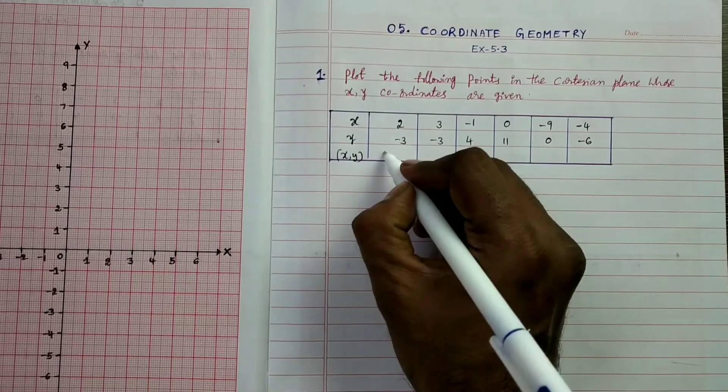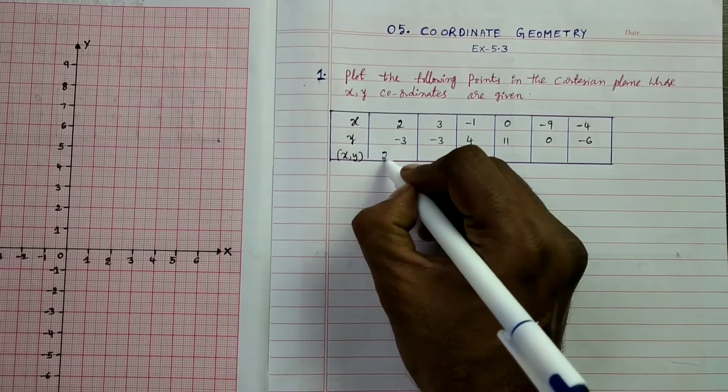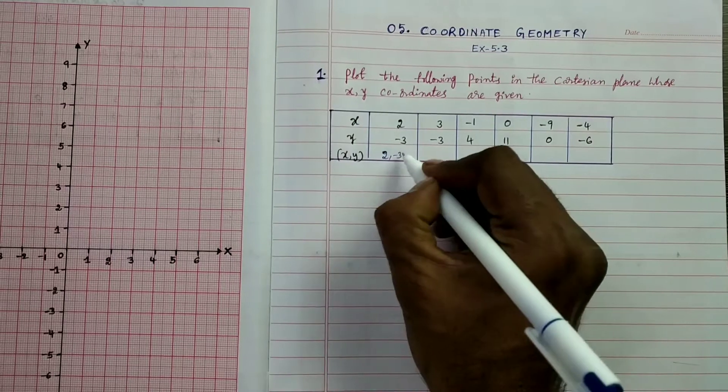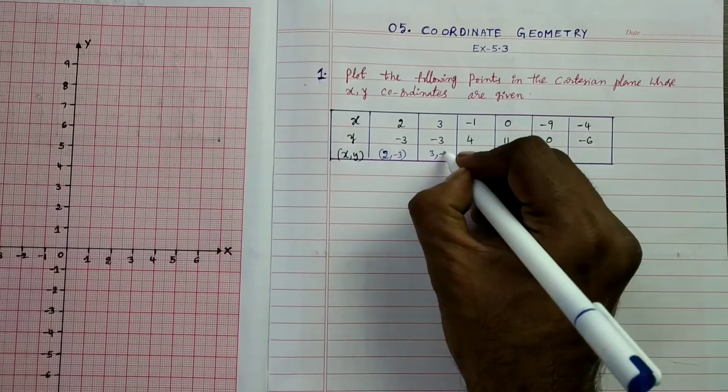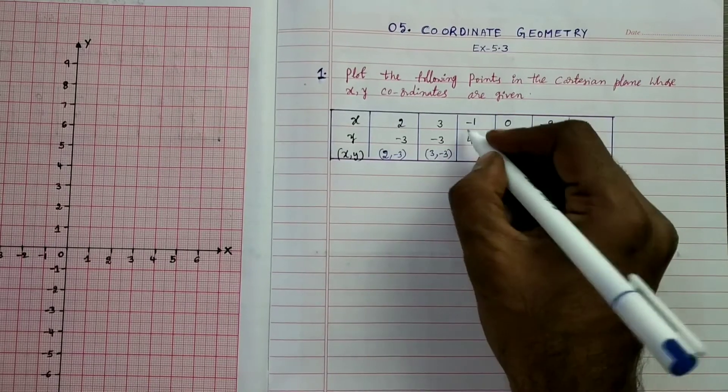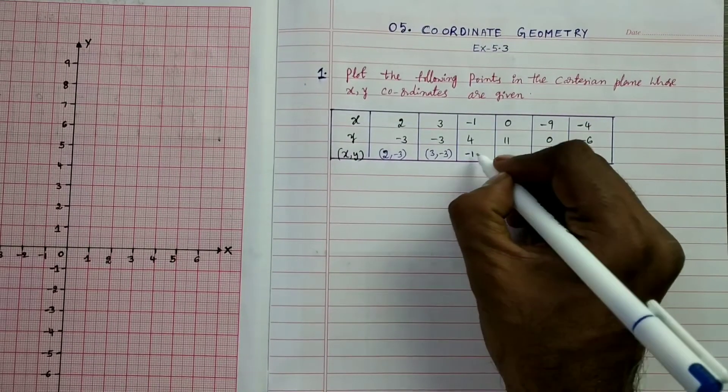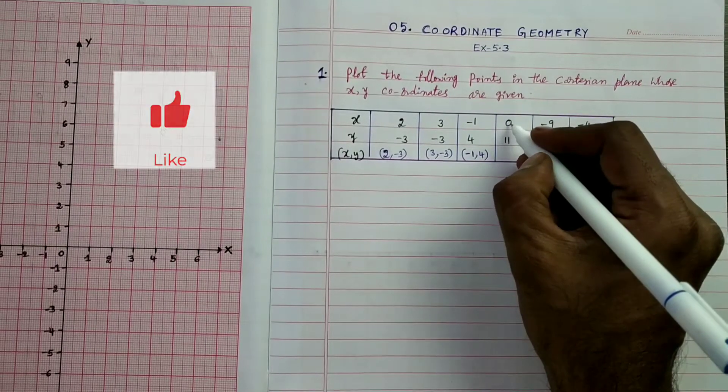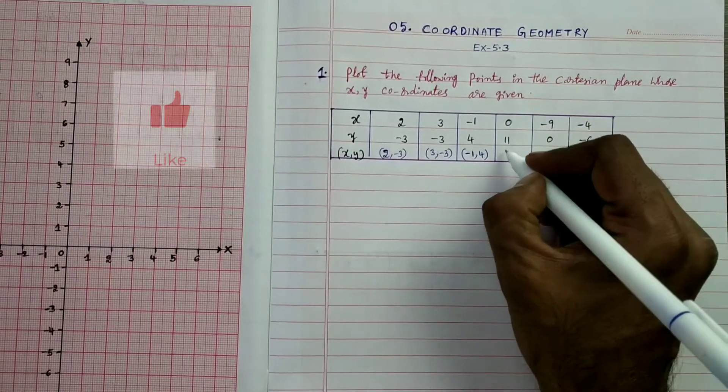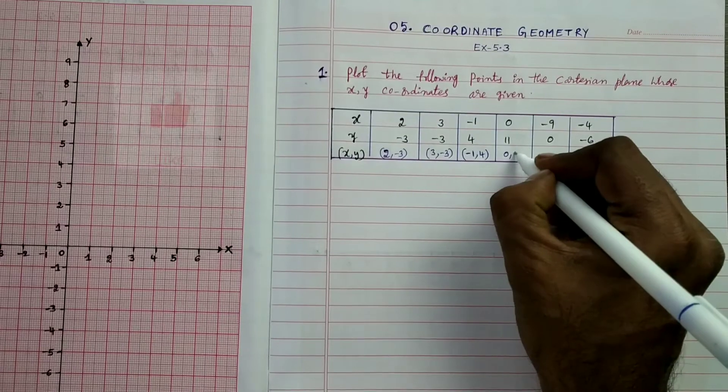Ordered pair means you can take a point where the x coordinate is 0 and y coordinate is 11. So this point will be (0, 11).